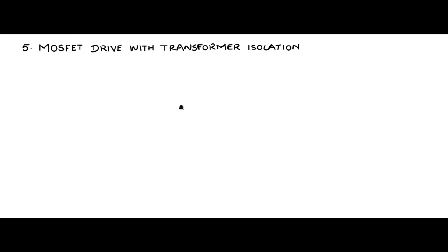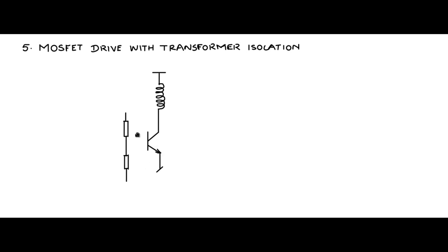Like in the case of the BJT base drive discussed with transformer isolation, the MOSFET gate drive can also be done with transformer isolation — a similar circuit. Let me draw that. The primary of the transformer is connected to an NPN transistor, and the NPN transistor is driven by a two-resistor drive which we are familiar with. Note that this NPN transistor can also be replaced with a MOSFET.